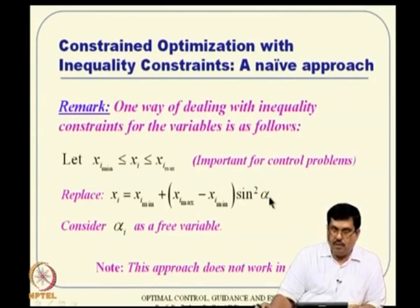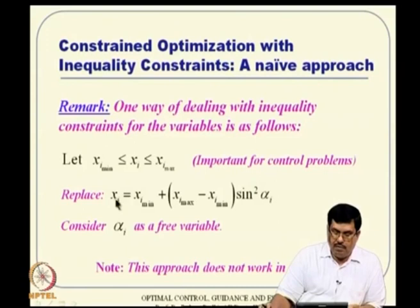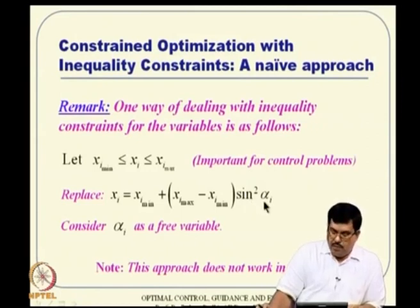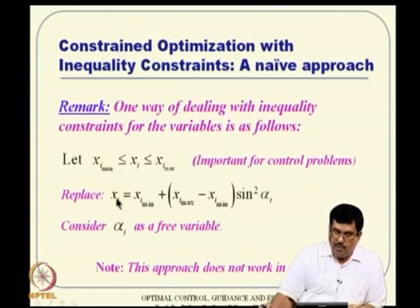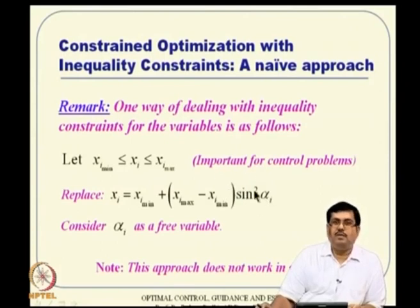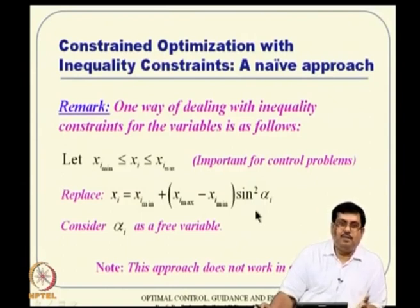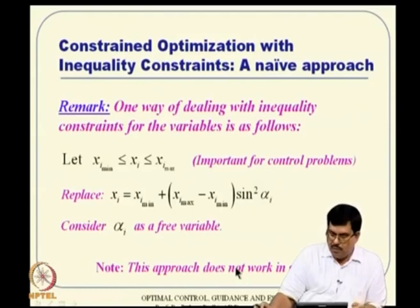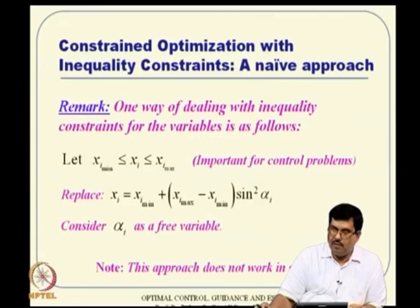This naive approach creates a huge problem: there are many values of αᵢ giving the same result since sin²(αᵢ) is not a unique function. If you carry out numerical optimization this way, it is not a good approach. Also, a simple problem can get translated into a very complex problem through this non-linear transformation. So while you can try it in a given problem, in general this approach does not work out very well. We are looking for better approaches.